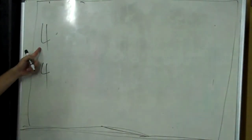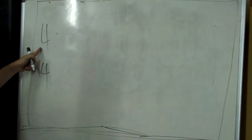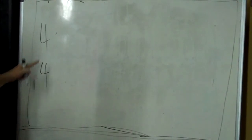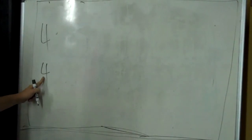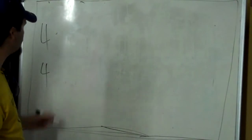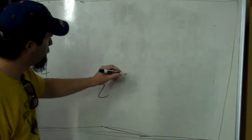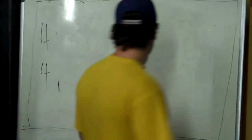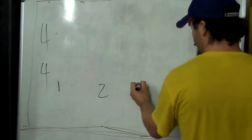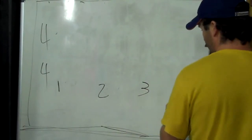What does the top number mean? It means how many beats are in the measure. The bottom number we don't care about right now, so don't worry about it. So we have to have four beats in here. I'm going to go ahead and write them in. One, two, three, four.